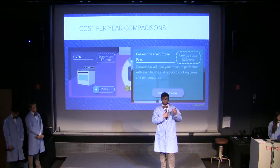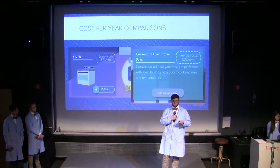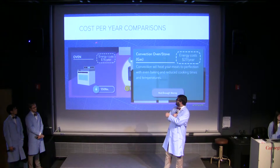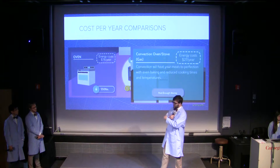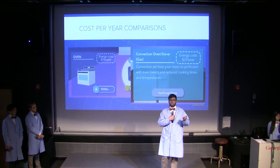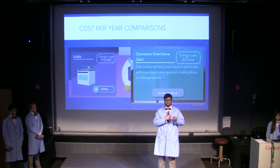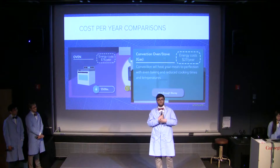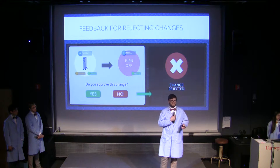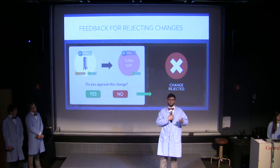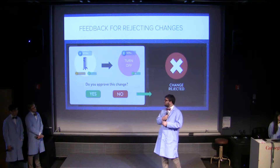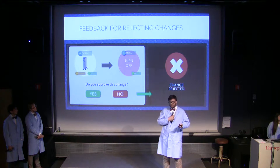We left the energy units on every item and every upgrade, but we also added a cost per year to both base items and upgrades. This allows players who haven't learned conversions between the three units used in the game to make quick and accurate comparisons. We also added both visual and audio feedback for positive and negative decisions when players are accepting or rejecting item upgrades.